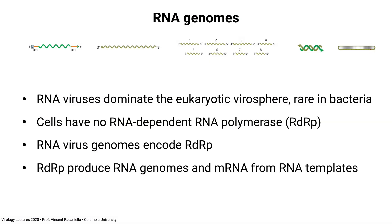Poll question: which DNA genome on entry into the cell can be immediately copied into mRNA? Most of you got double-stranded DNA, which is right. Only double-stranded DNA can be transcribed — nothing else. Gapped DNA, no. Circular single-stranded, no. Linear single-stranded, no. RNA viruses — RNA viruses dominate the eukaryotic virosphere. They are very rare in bacteria. Key point: cells don't have RNA polymerases that can copy RNA genomes. RNA-dependent RNA polymerases, or RDRPs, are unique to viruses. So all RNA virus genomes, except for those small ones that encode nothing, encode an RDRP. These polymerases make mRNA and replicate the genome to make more. This is a major difference between RNA viruses and DNA viruses.